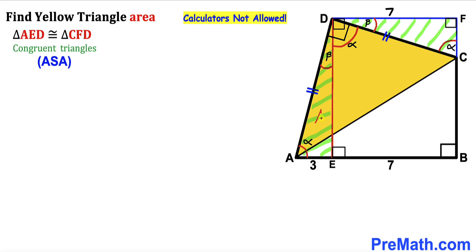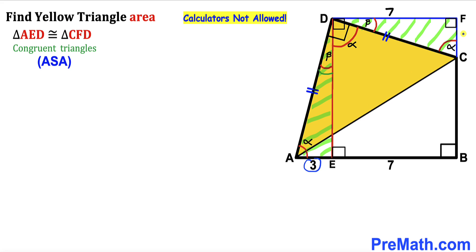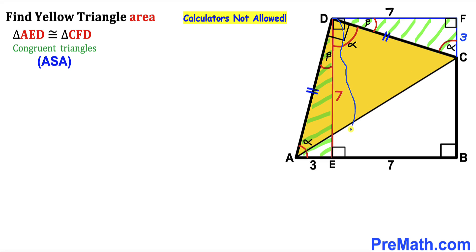Therefore, right triangle AED and right triangle CFD are congruent by the Angle-Side-Angle congruency theorem, since the shared side lengths are equal, with corresponding angles beta and alpha matching. Since the triangles are congruent, segment AE equals segment CF — so CF is 3 units. Likewise, side DF equals side DE, so since DF is 7 units, DE is 7 units as well.